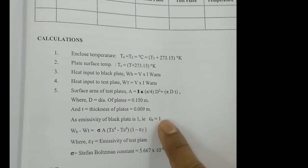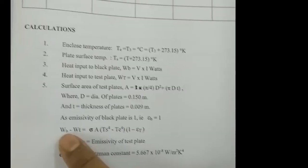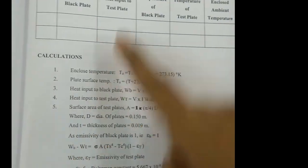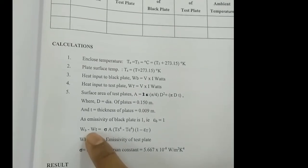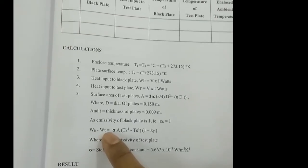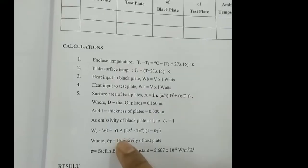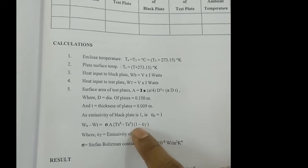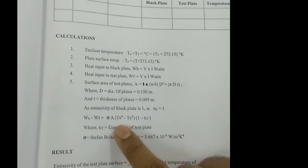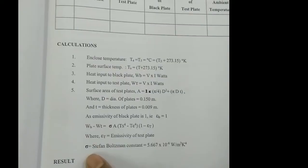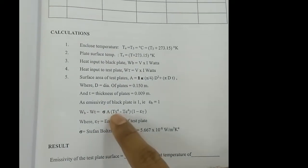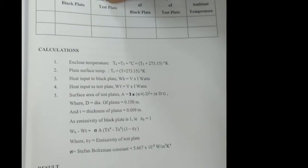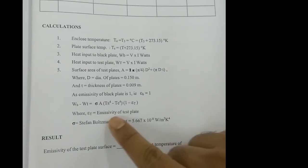The emissivity of the black plate is 1, because it is a black surface. The heat input difference for the two plates, WB minus WT, is equal to σ × A × (Ts⁴ − Te⁴) × (1 − emissivity of test plate). This is the formula from which we can get the emissivity of the test plate, where σ is the Stefan-Boltzmann constant. WB is V×I for the black plate, and WT is V×I for the test plate, so we can calculate the emissivity of the test plate.